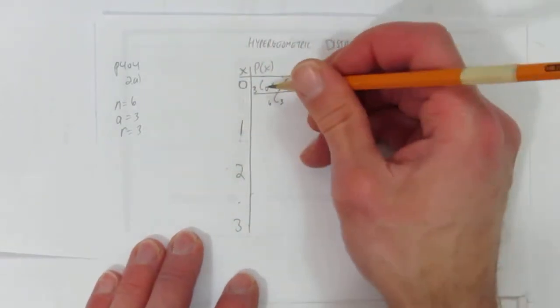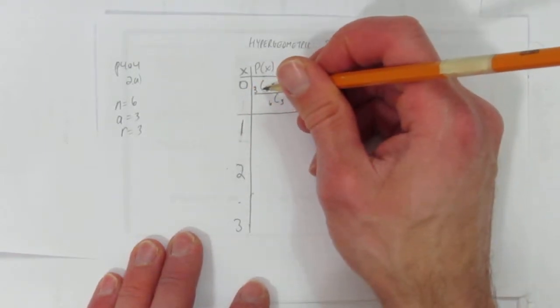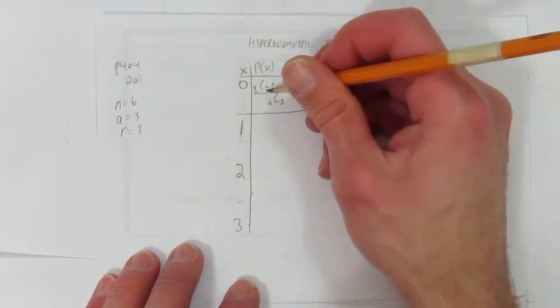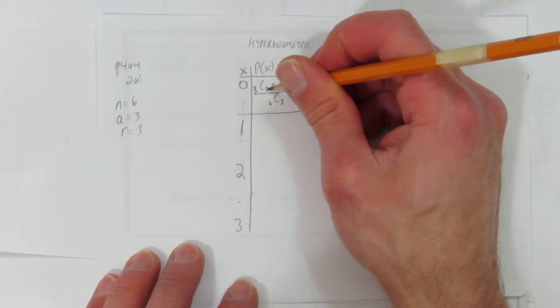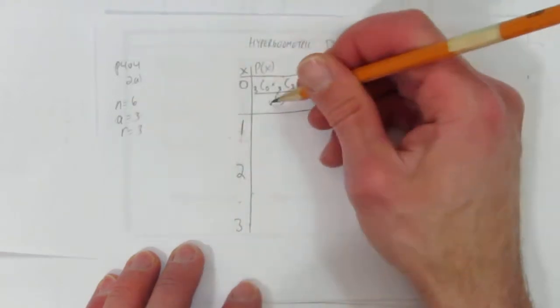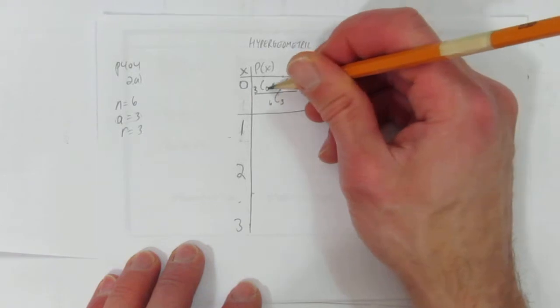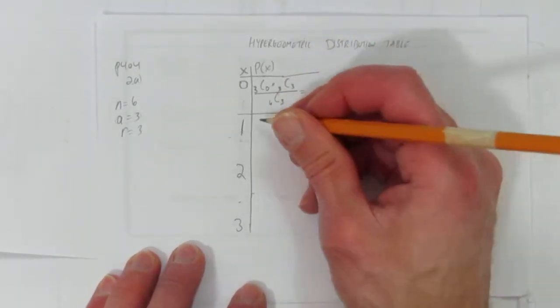So what do you see here? You see the hypergeometric distribution formula. Let's break it down again though so you know where these numbers are coming from. Of the 3 things we want choose none of them, of the 3 things we don't want choose 3 of them, and of the total 6 things we have to choose 3. These 2 numbers always add to n and these 2 numbers always add to r. We'll calculate that in a bit.